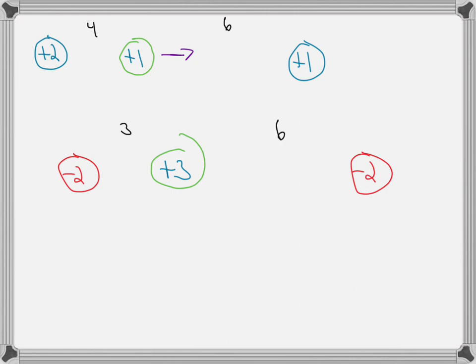So now there won't be repulsion, there will be attraction. This plus 3 is attracted to this minus 2, and this plus 3 is also attracted to this minus 2. But the closer they get to each other, the greater the force of attraction.